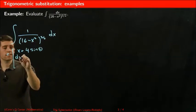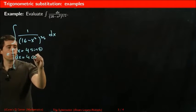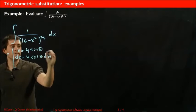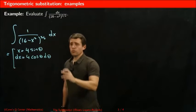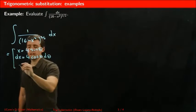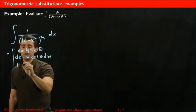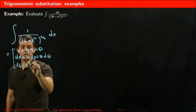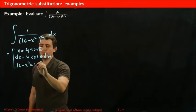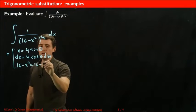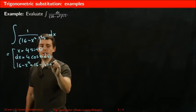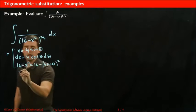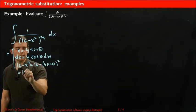The dx then is 4 cosine theta d theta. And I'm going to also figure out how much is the quantity inside the square root here. If I substitute 16 minus 4 sine theta squared, if you simplify, this is 16...